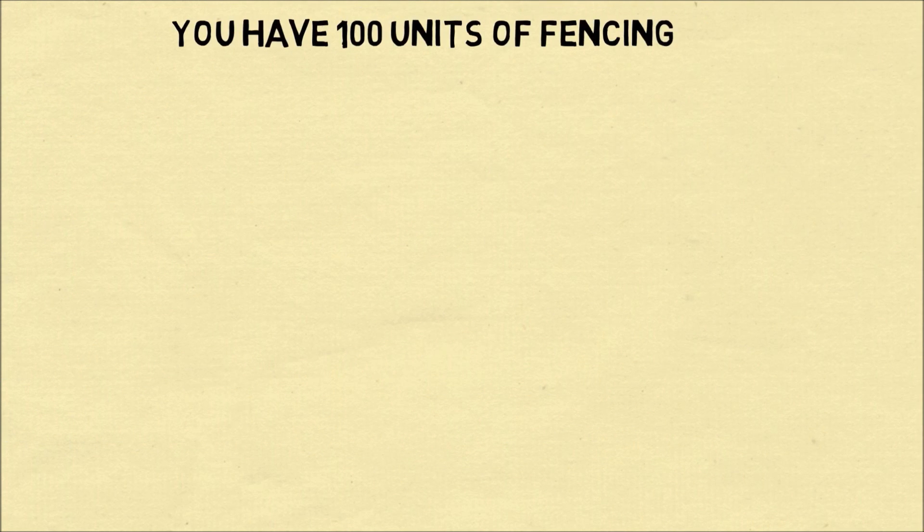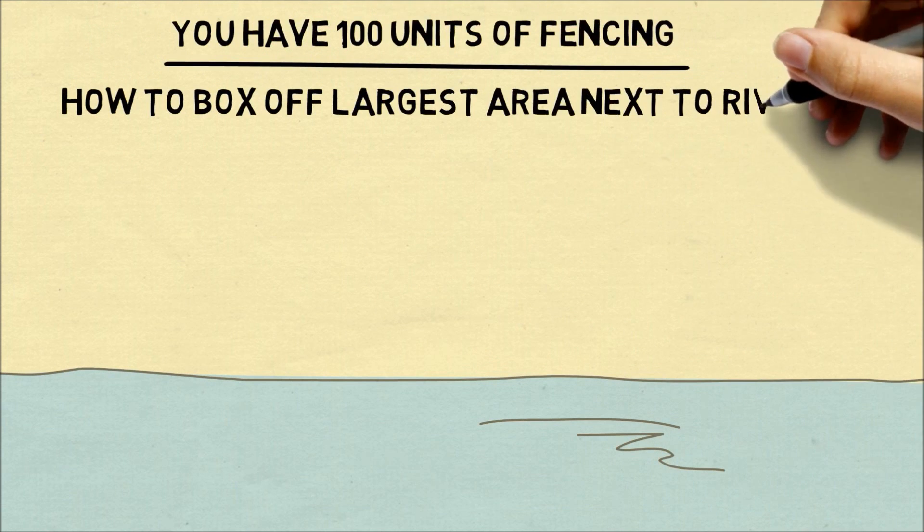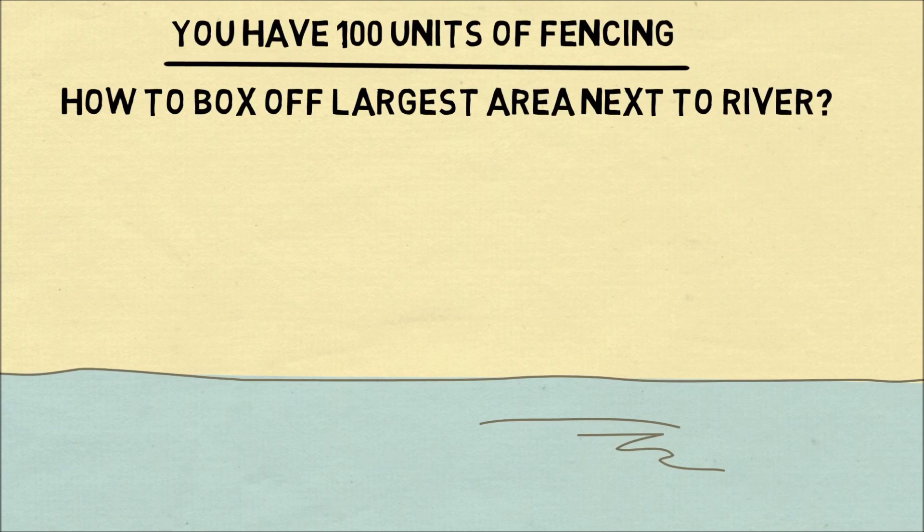So imagine you have a hundred units of fencing. We'll think about this as wire fencing and draw it as a straight line. The puzzle is, how can you box off the largest area possible that's next to a river?